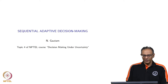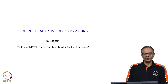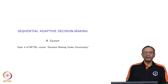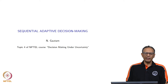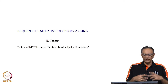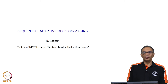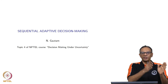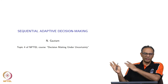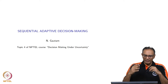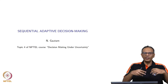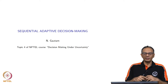The next topic is Sequential Adaptive Decision Making. In this course on Decision Making Under Uncertainty, we have so far seen situations where we did not adapt a whole lot. In this case, we are going to be talking about where decisions are made one after the other sequentially, and you kind of adapt depending on how the randomness gets involved.